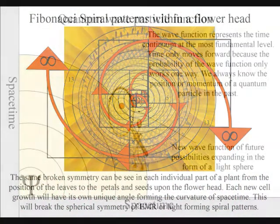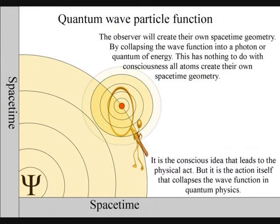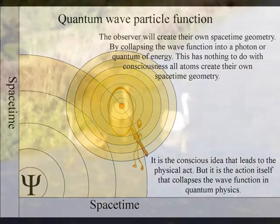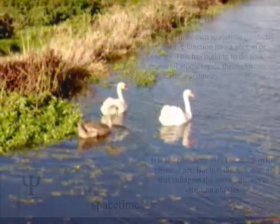It is because the observer can choose when and where to collapse a wave function, that we have free will. Life will create its own ripples in the fabric of space-time, forming its own broken symmetry of its own evolutionary path or timeline.